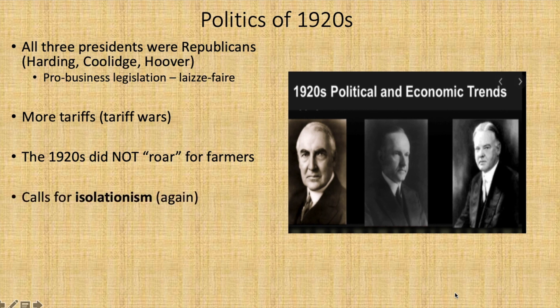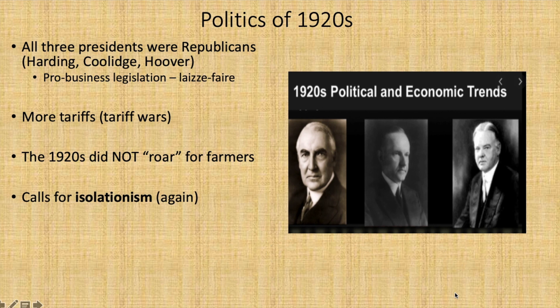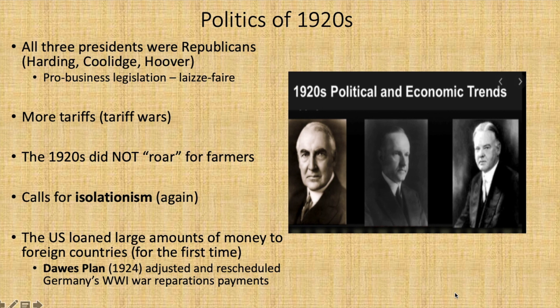Calls for isolationism again. In the early 20s, Warren Harding won the presidency running on a platform of a return to normalcy — he wanted the United States to focus on the United States. For the first time in history, the U.S. loaned large amounts of money to foreign countries. The most notable example is the Dawes Plan of 1924, which adjusted and rescheduled Germany's World War I war reparation payments, devised by U.S. banker Charles G. Dawes. The basic idea behind the plan was to make it easier for Germany to pay reparations and had two key parts.